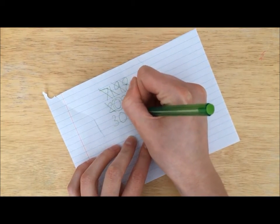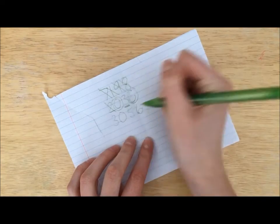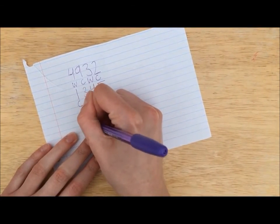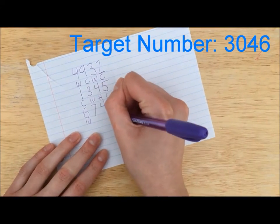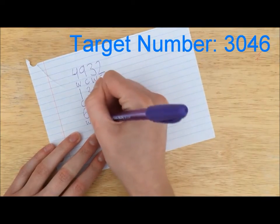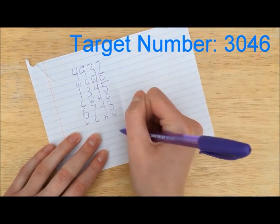Back to the green player. It's the purple player's turn again. She guesses 6,743. I let her know that the thousands place and the ones place have warm digits, the tens place is still hot, and the hundreds place is cold.